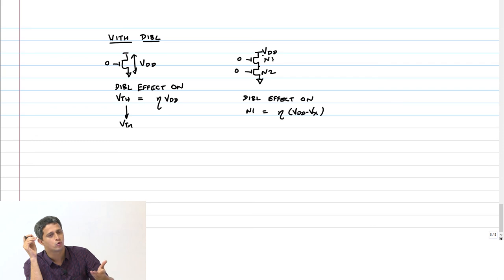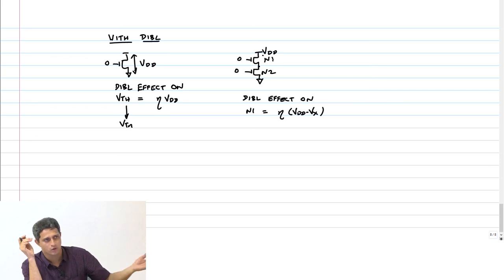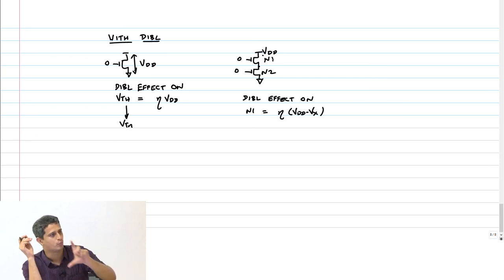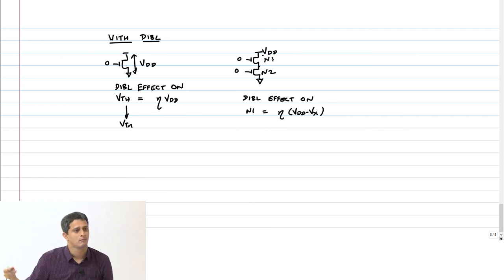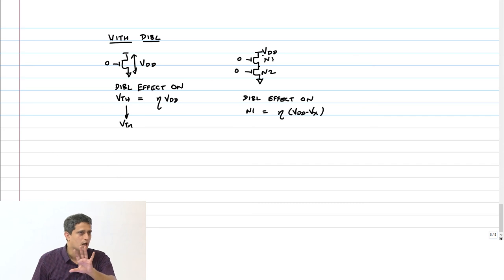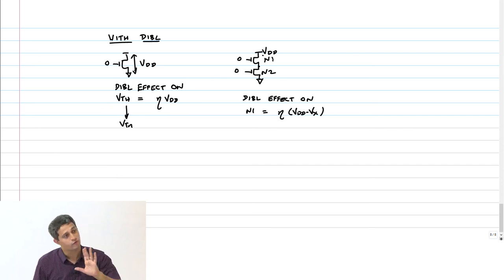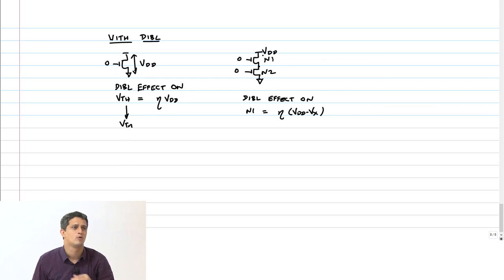I would urge you to do a simulation now — go to your simulator LTSPICE, put a single transistor and a double transistor, and see how much reduction you get in current. Put the appropriate widths and you will find the reduction is much more than just W/2. I will explain that in the next class.